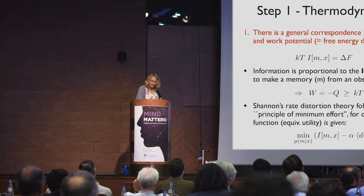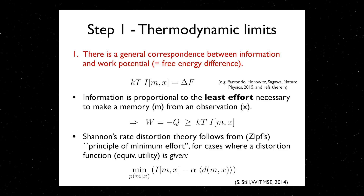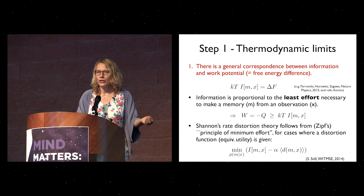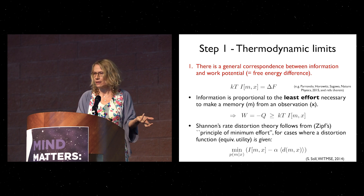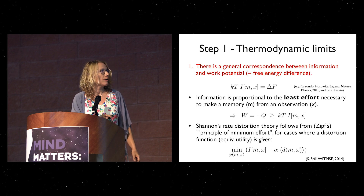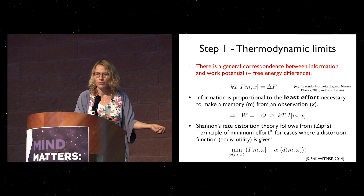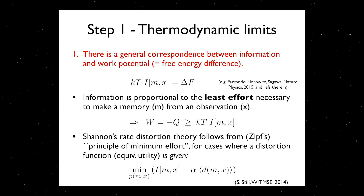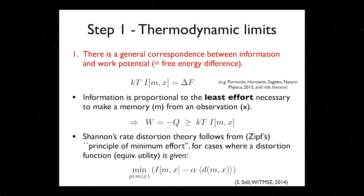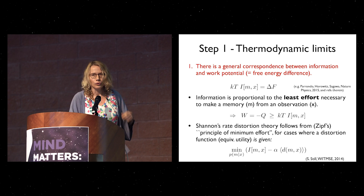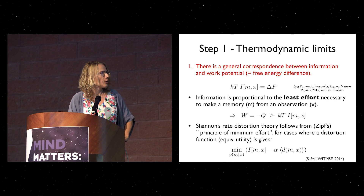There is a general correspondence between information and work potential — the free energy difference. This free energy difference is the least amount of work you have to put into a system to make a memory of some data you're observing. If X is your observable and M is your memory, then the smallest amount of work you need to do on the memory to capture information about that variable is proportional to the mutual information between your memory and the variable you're trying to summarize. In that sense, information is proportional to the least effort needed to make a memory.